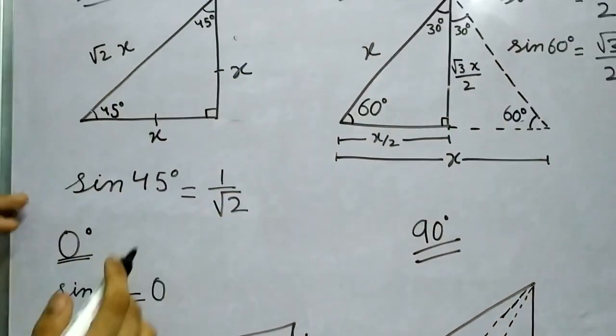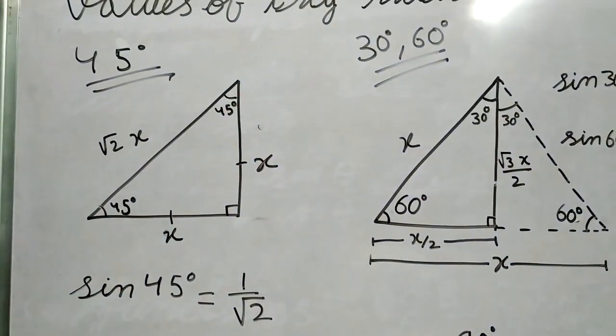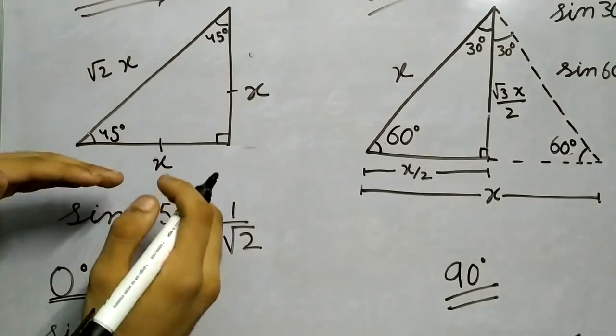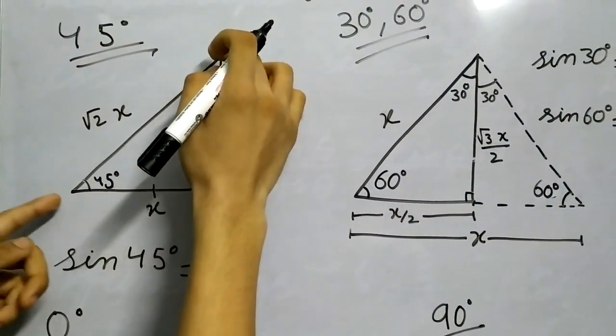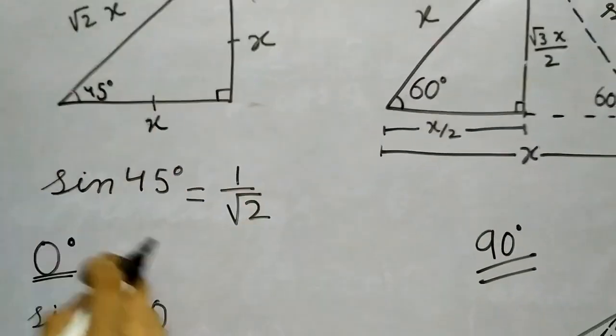So how did we solve for 45 degree? We constructed a 45-45-90 triangle and then realized that these two side lengths are equal. Calculated this using the Pythagorean theorem, and we found out that sin 45° will be 1 by √2.